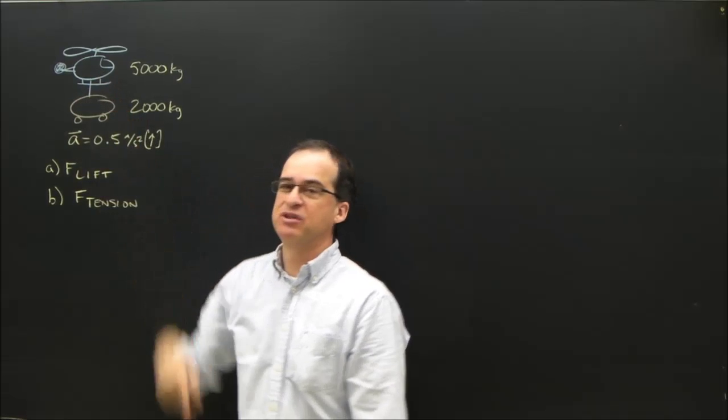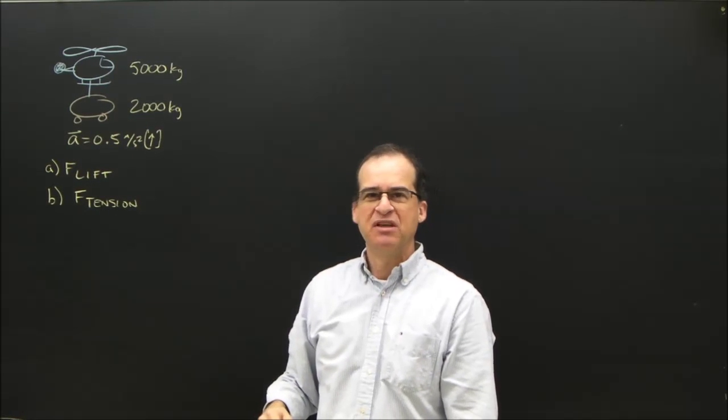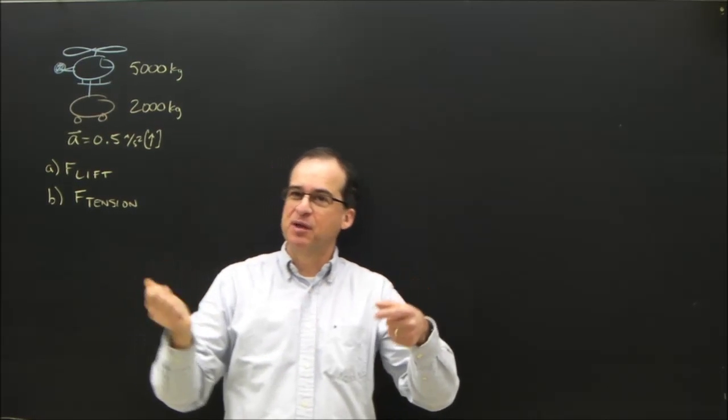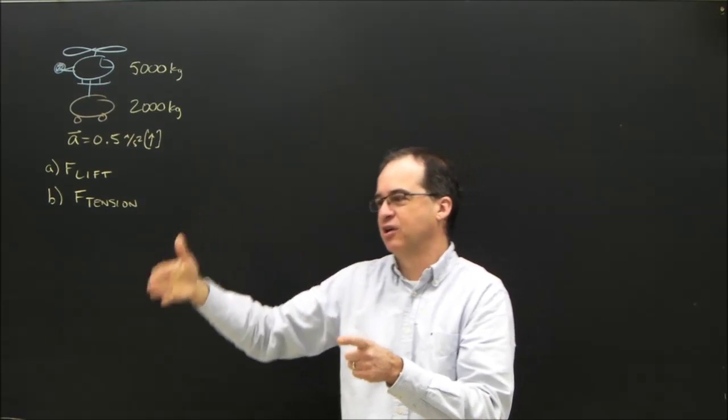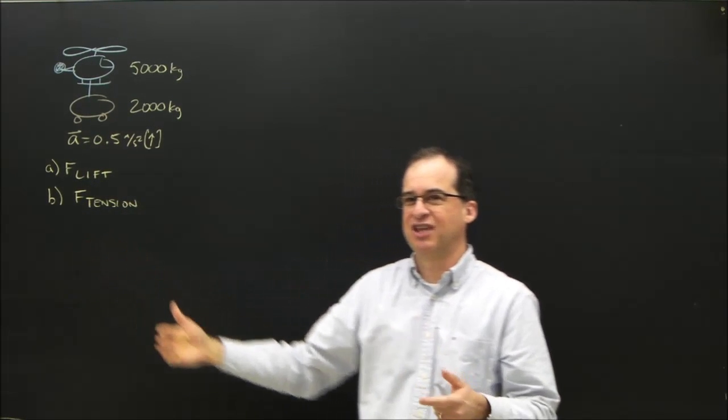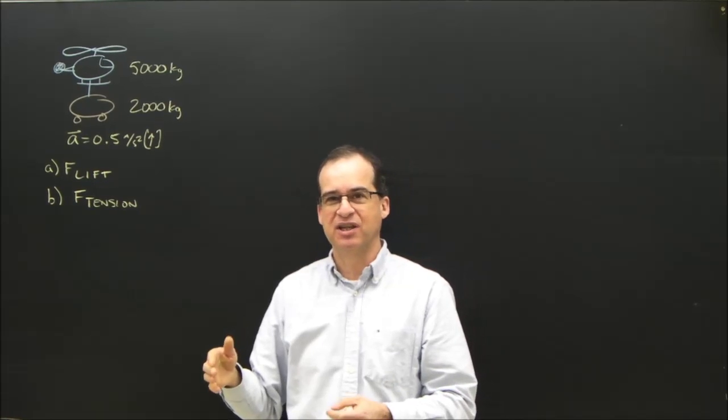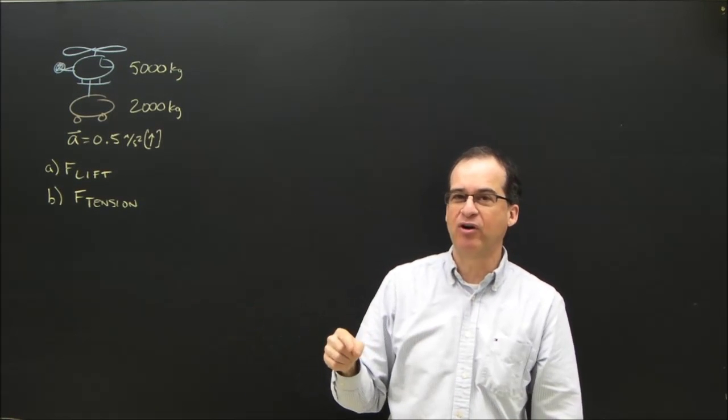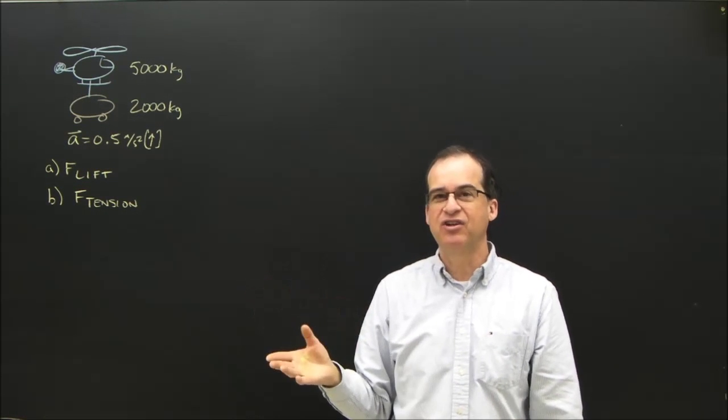And what's the tension in this rope between the helicopter and the car? This is sort of like the ones with a box being pulled. You've got a rope pulling a box, pulling another box, pulling another box. It's kind of a Newton's second and third law problem. And the way we did that was we said, just isolate any part of the diagram and F net equals MA.